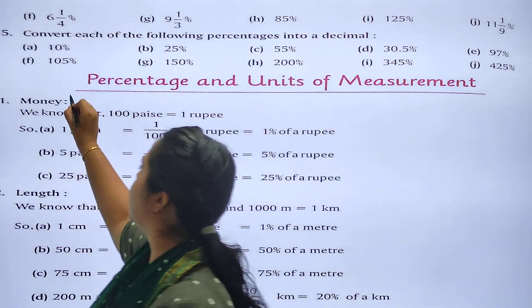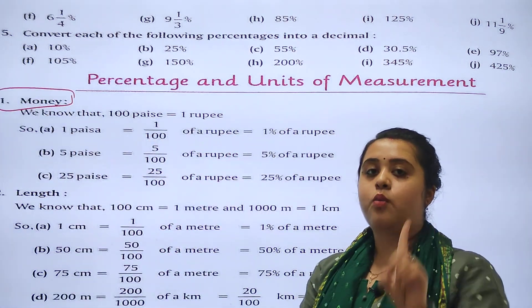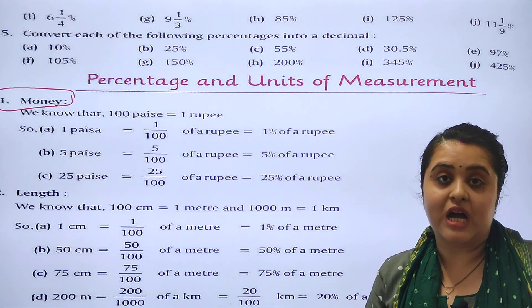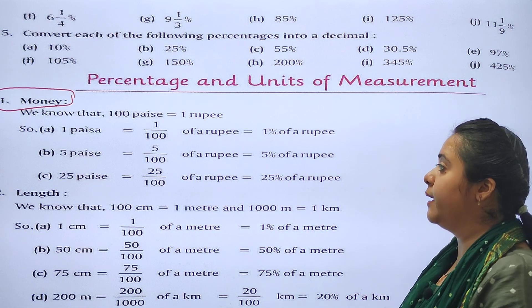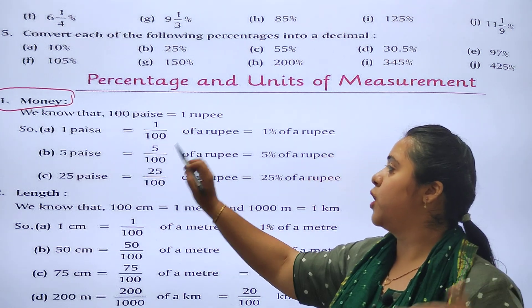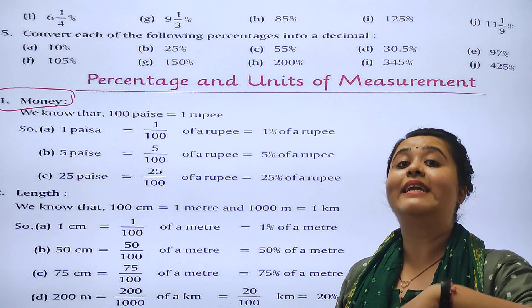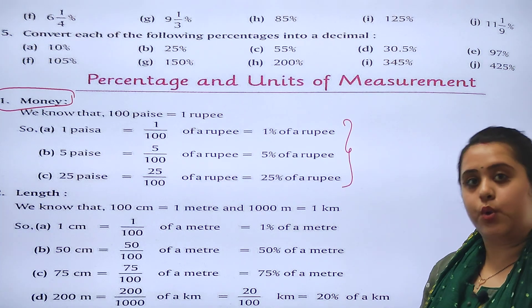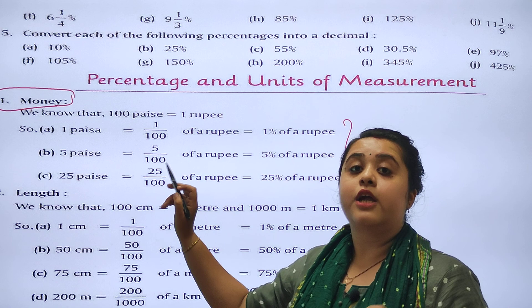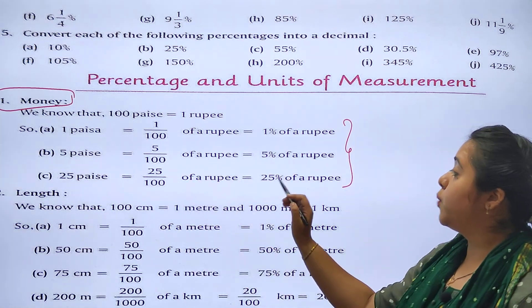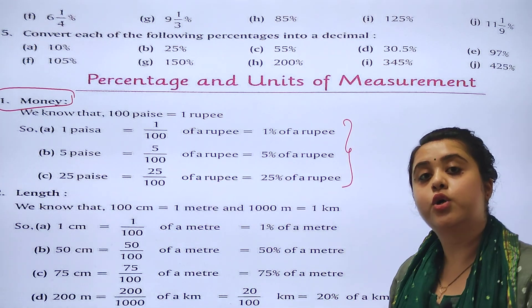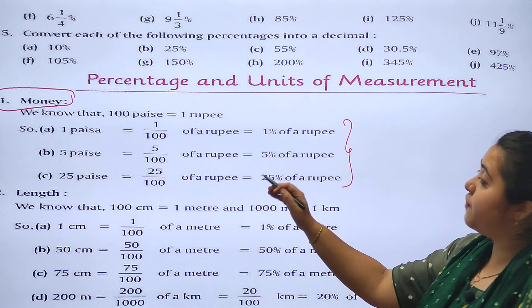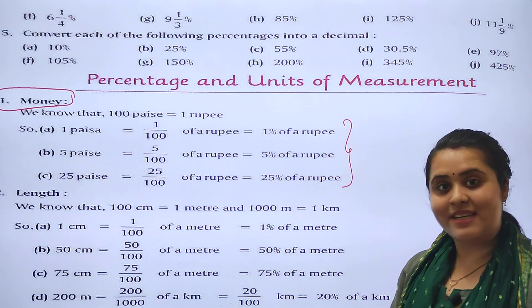The first term is money. We know that 1 rupee equals to 100 paisa. So 1 paisa equals to 1 upon 100. We will be simply dividing it with 100. You can see examples also. 25 paisa is 25 upon 100, so 25 percent of a rupee. 5 paisa is 5 upon 100, so you can say 5 percent of a rupee.